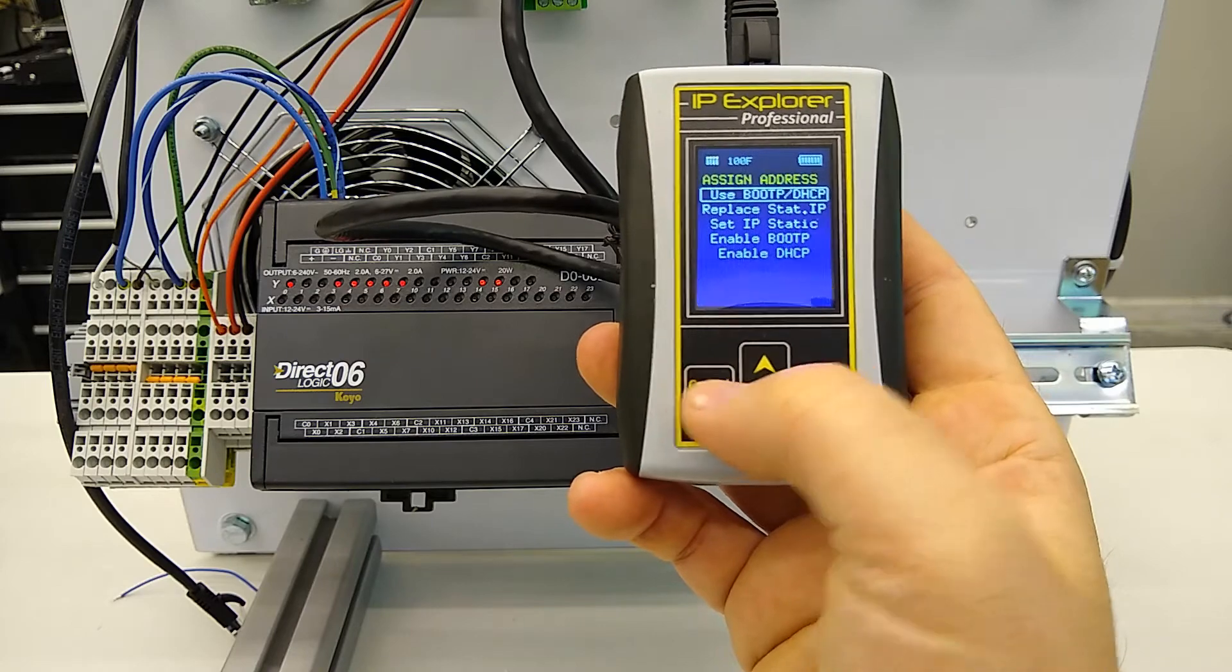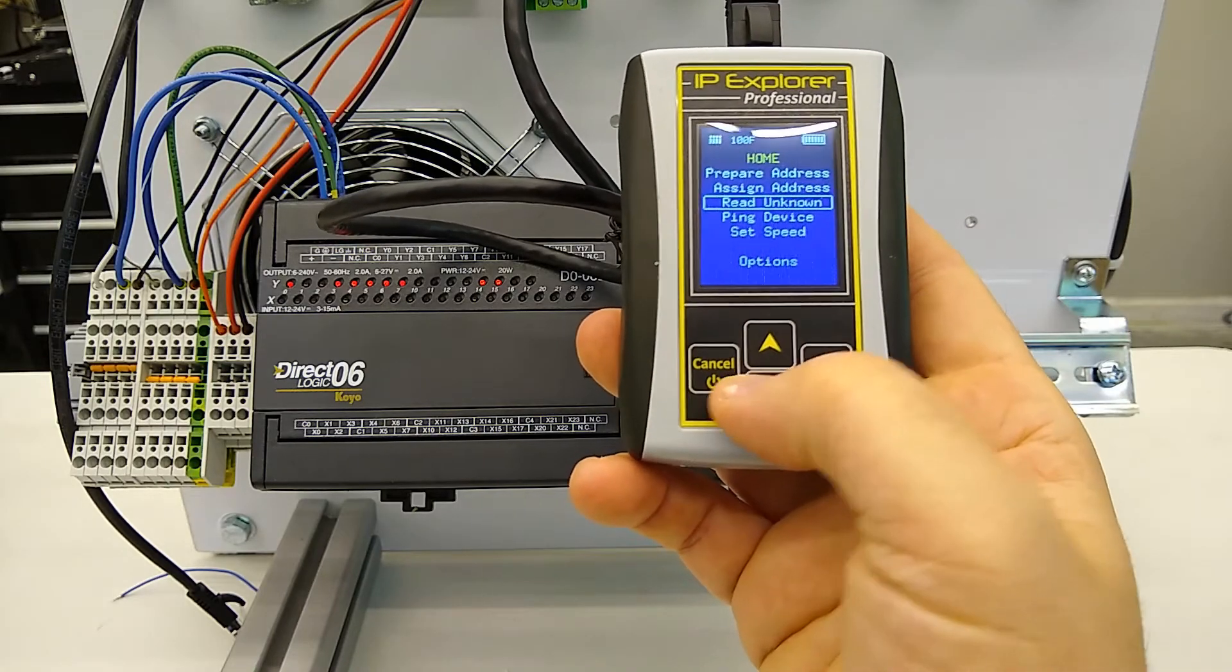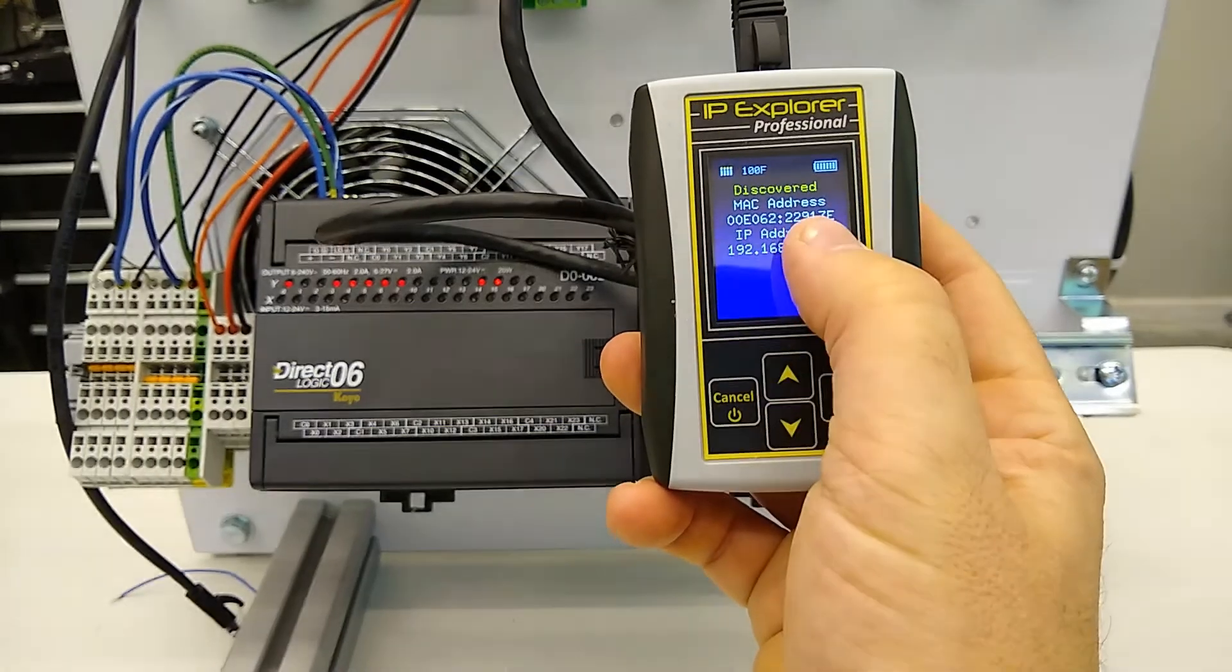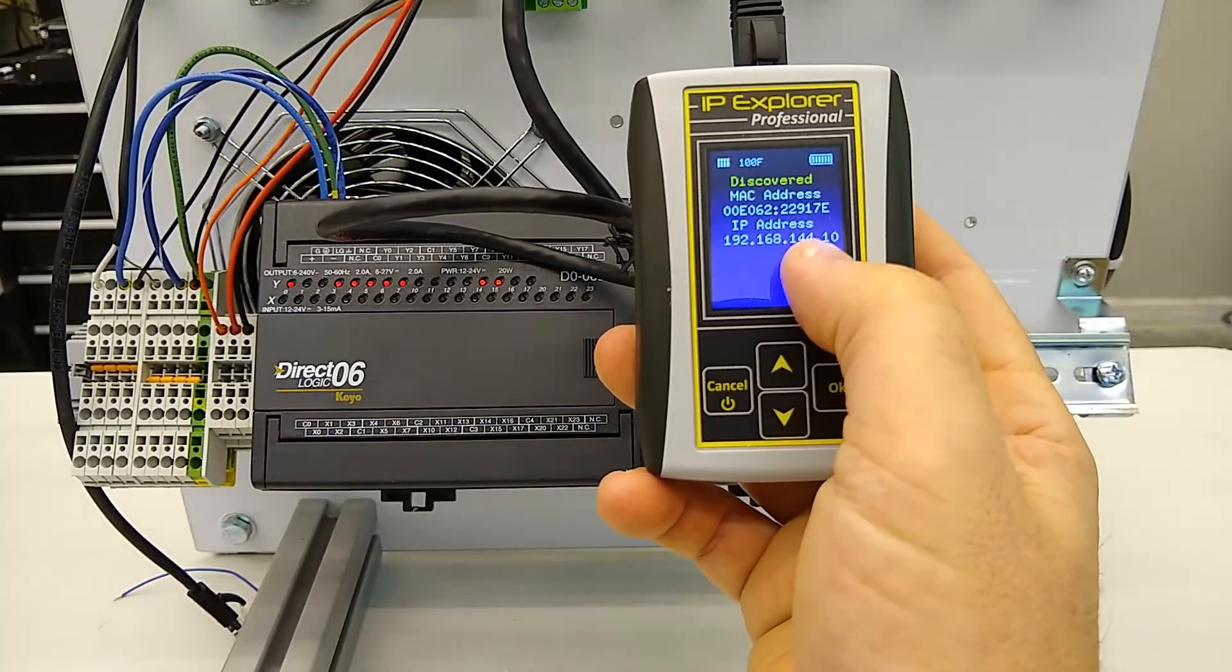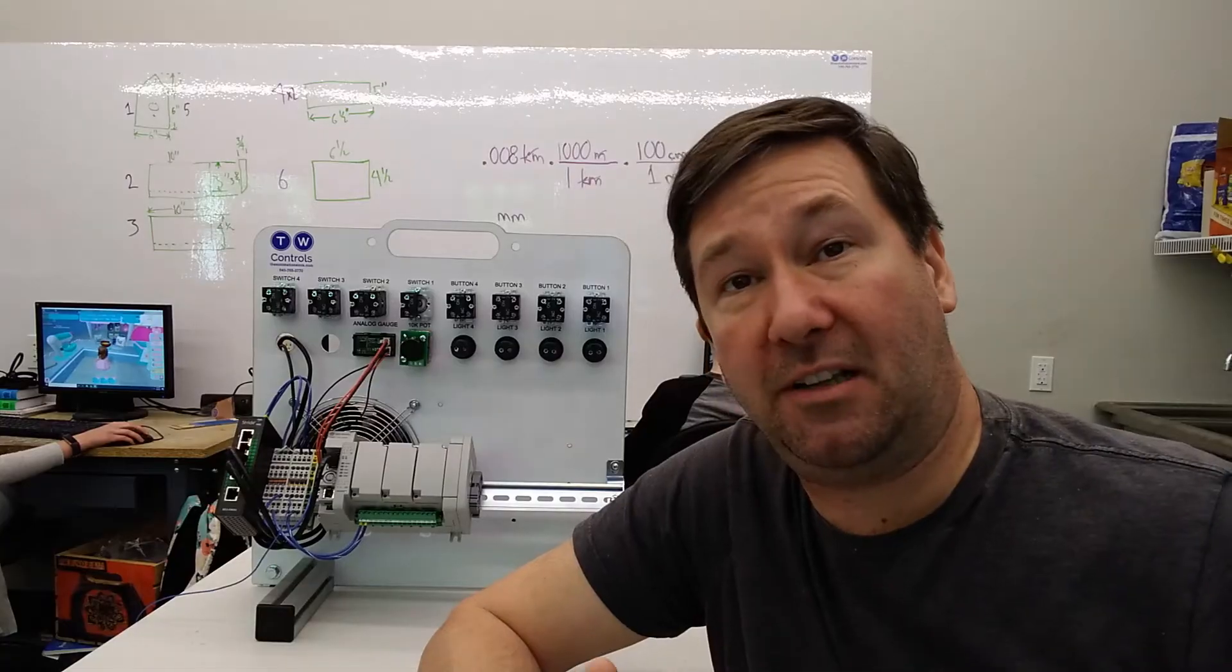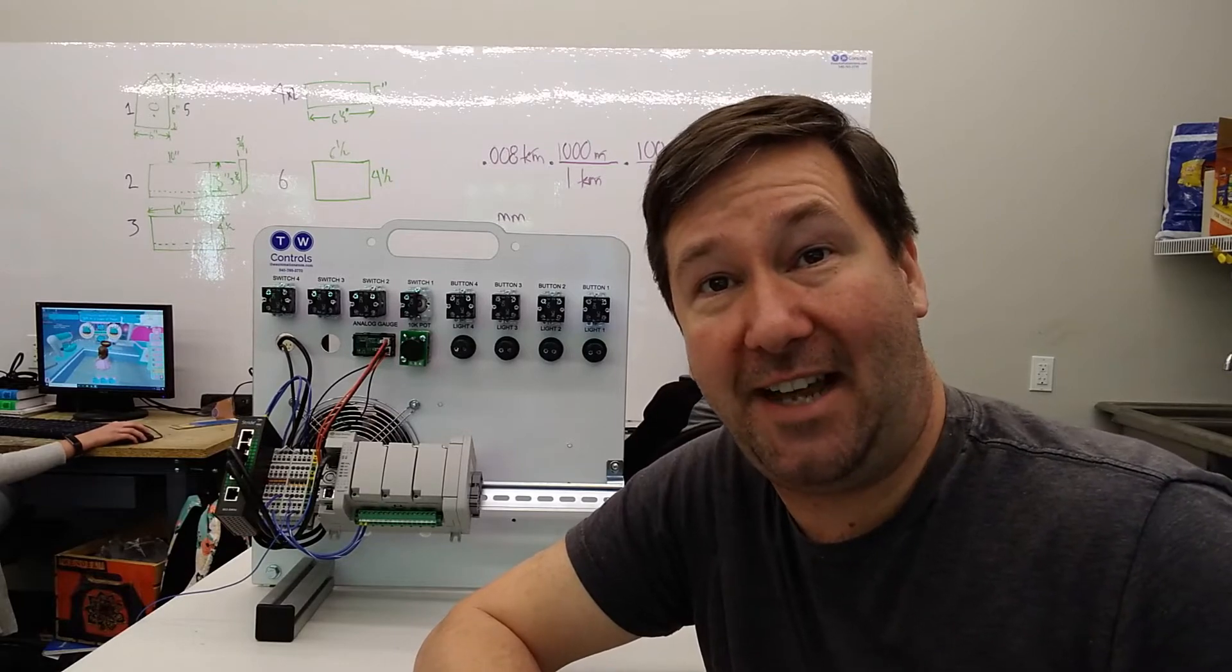Go back to our main menu. Then we can go down to read unknown, and it's going to show us that IP address is in fact assigned. It's also going to tell us the MAC address, which is written on the side of it you can use to verify that it is the correct device. I'll put a link to the PLC tools SIM-IPE in the description. Till next time.